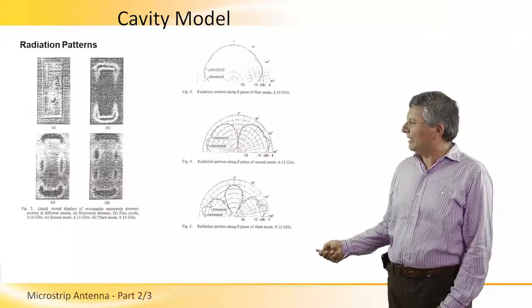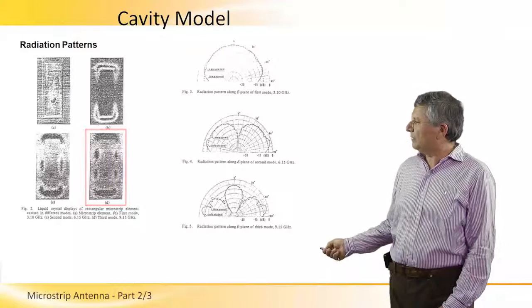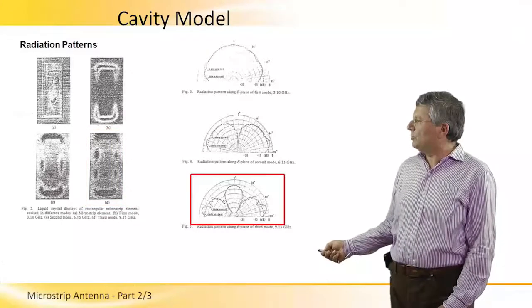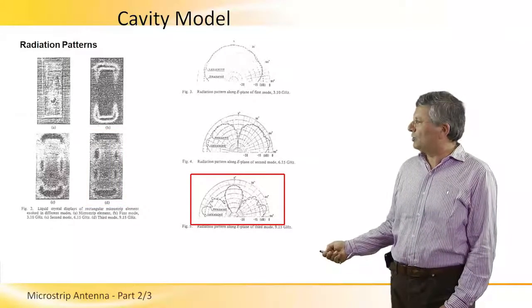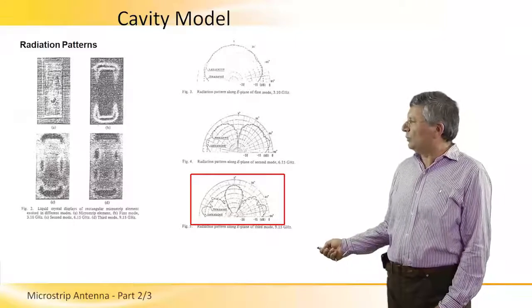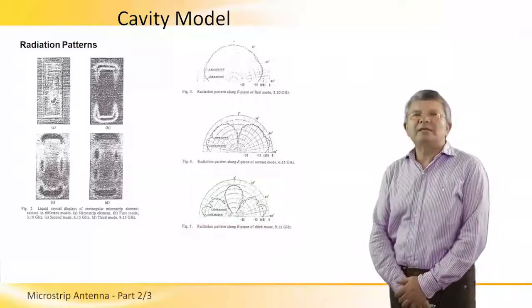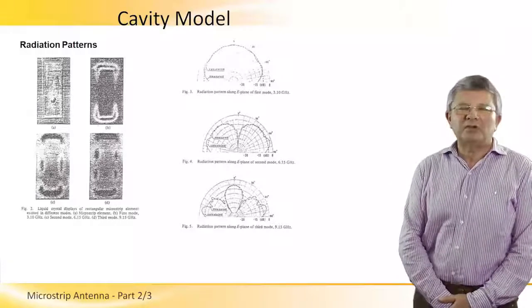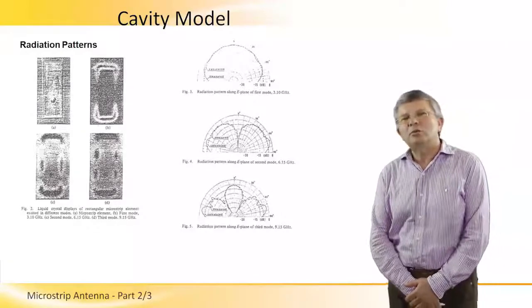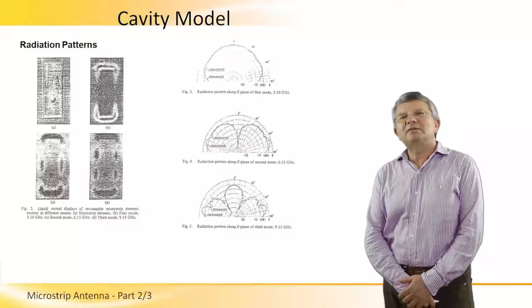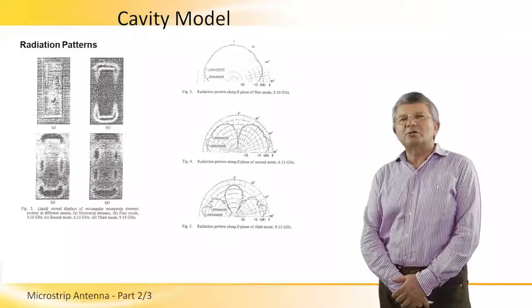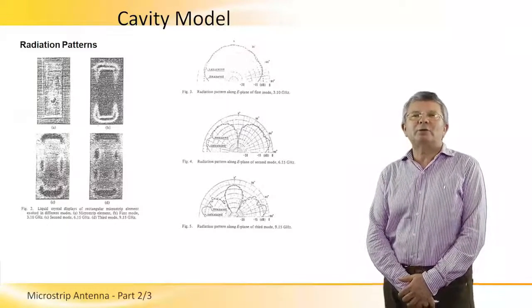And therefore we obtain a null on this normal to the plane of the microstrip. And for the higher frequency, this is the equivalent radiation pattern which is obtained. And so what we can see here, actually, that if we excite the patch in different types of modes, we can obtain from the microstrip antenna different types of radiation patterns. So in some applications, this is very important.